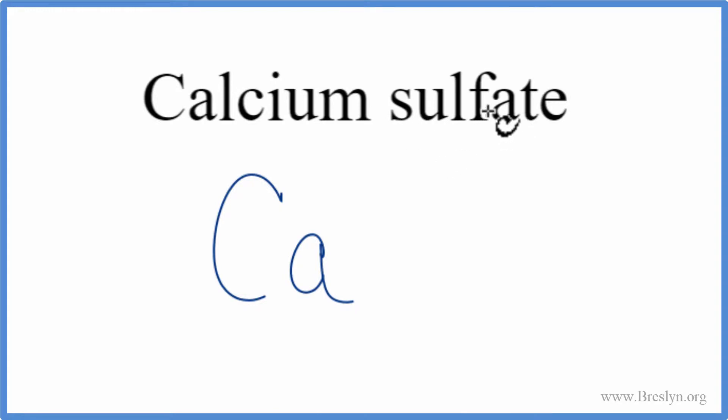We then look up sulfate, but not on the periodic table, because sulfate ends in A-T-E. So that means this is a polyatomic ion, and we need to look this up on a table of common polyatomic ions, or have it memorized.